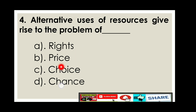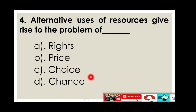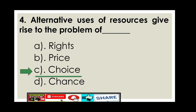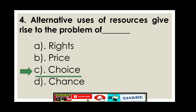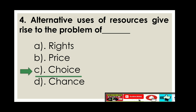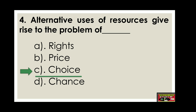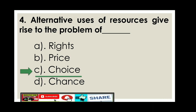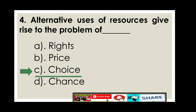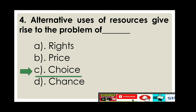Question number four: Alternative uses of resources give rise to the problem of dash — option A: rights, option B: price, option C: choice. The right answer is option C: choice. Choice means the act of preferring one course of action to others. Economics is largely concerned with explaining how choices are made, as wants are many and competitive while means are limited. There must be choice between wants and between means.